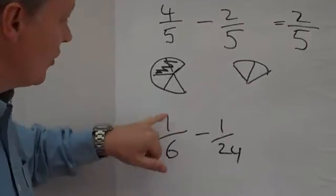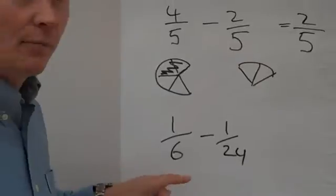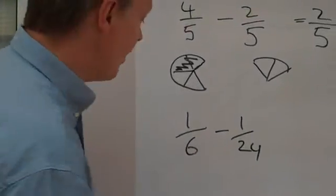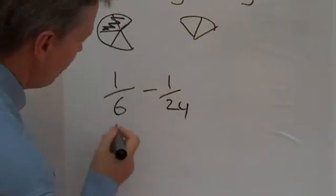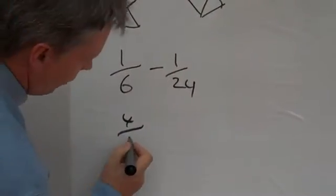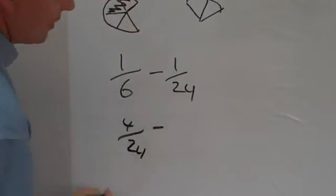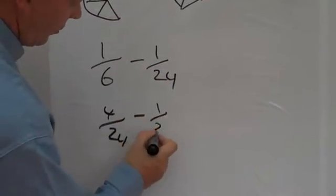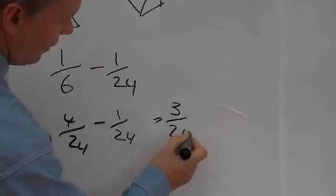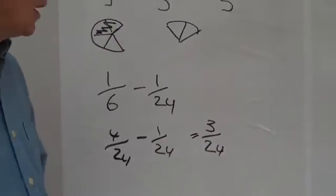So, I need to change the top and the bottom again, to make sure that both numbers, the denominators, are exactly the same. So, one times four is four, six times four is twenty-fourth, take away one-twenty-fourth, and the answer is three-twenty-fourths.